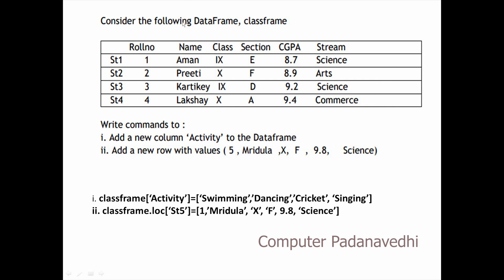Next, consider the following DataFrame called class_frame. We will write this in a sample custom paper. Class_frame — if you click the class frame, we will name the DataFrame. First, add a new column 'activity' to the DataFrame. class_frame['activity'] is equal to ['swimming', 'dancing', 'singing', 'singing'].